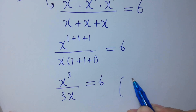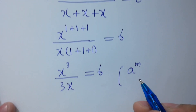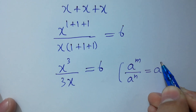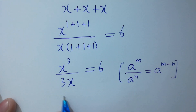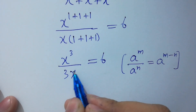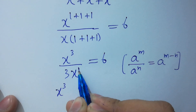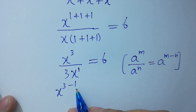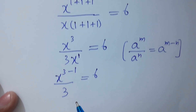We have x to the power 3 over 3x equal to 6. Since a to the power m over a to the power n equals a to the power m minus n, it will be equal to x to the power 3 minus 1. In the next step, equal to 6 and 3 as it is.